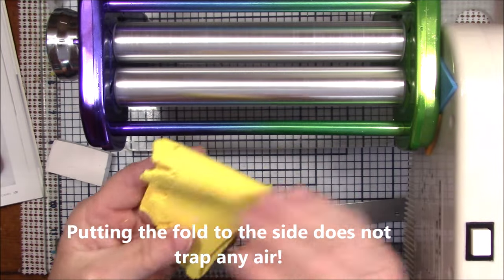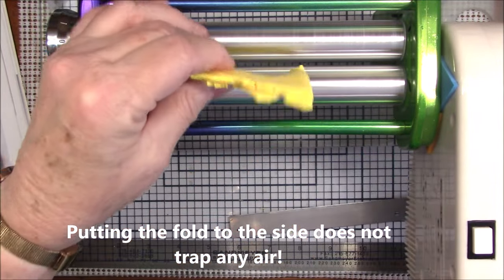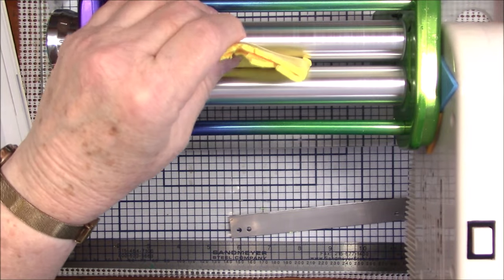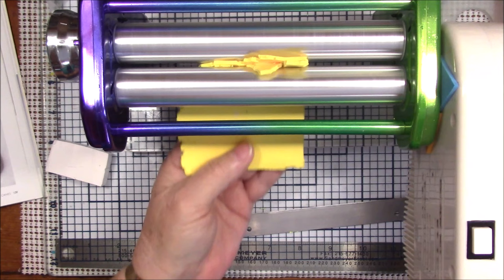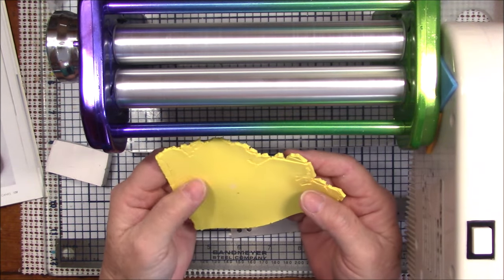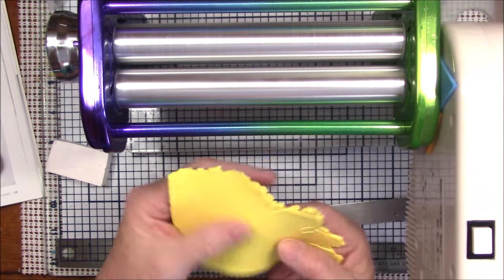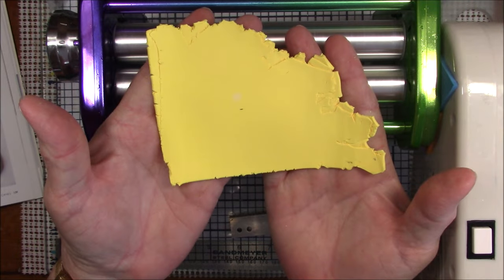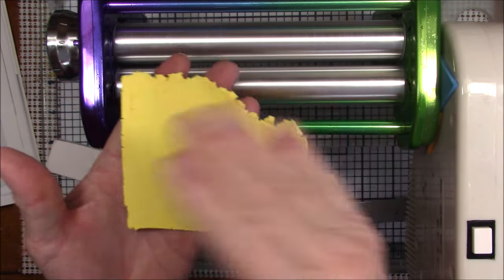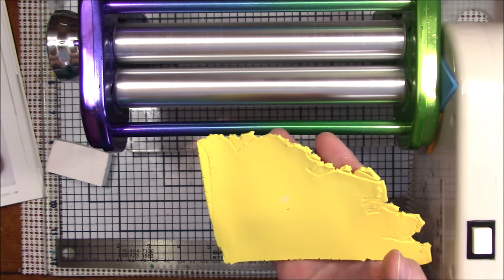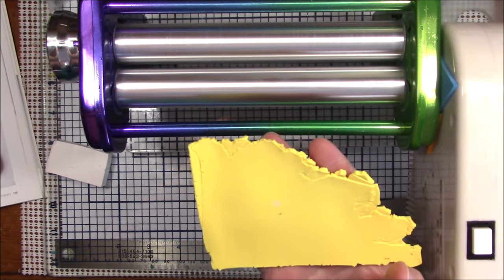Then I fold it, turn it a quarter of a turn, and run it through this way again. Now what this will do is eventually when you're finished, you're going to have either a long strip or you're going to have something a little bit better rectangular shape than this is. This is not very rectangular, so I'm going to turn the sound off and I'm going to go ahead and finish conditioning this yellow.